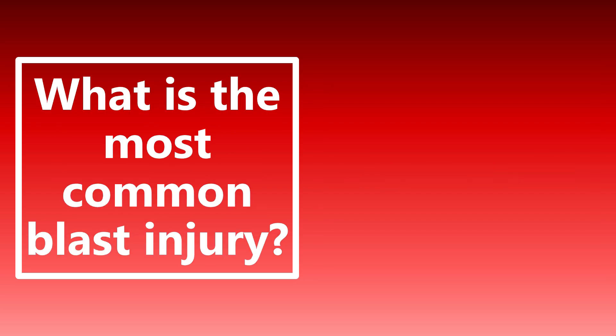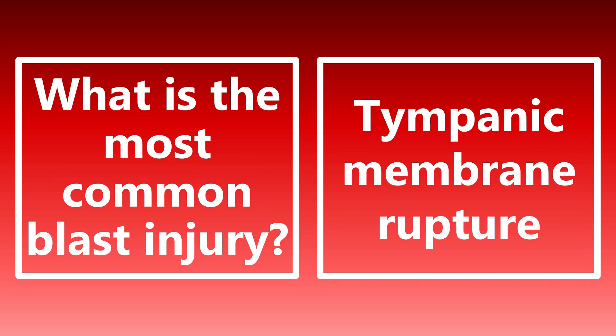What is the most common blast injury? It's going to be tympanic membrane rupture. This is technically a primary injury because it's a direct injury from the blast wave itself. Most common blast injury: tympanic membrane rupture — a primary injury caused directly by the blast wave.